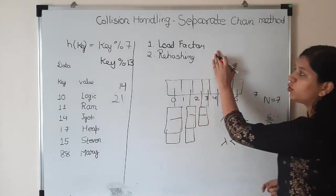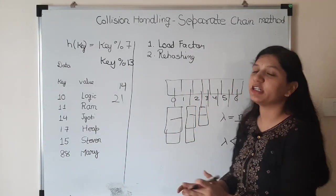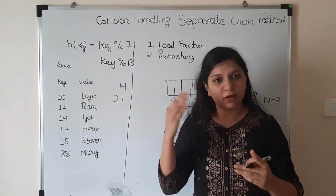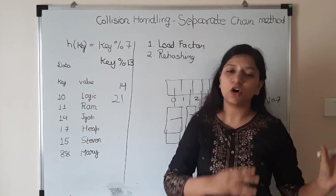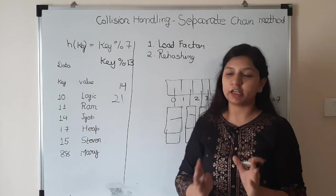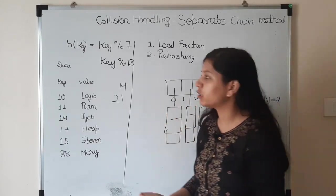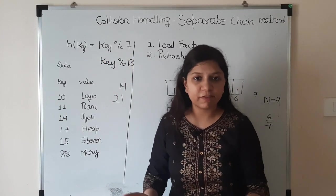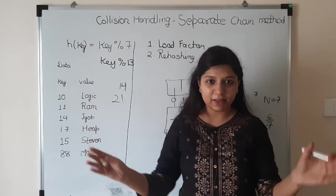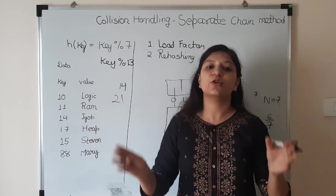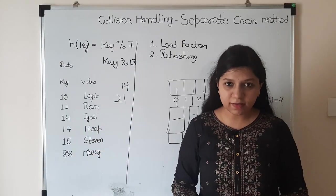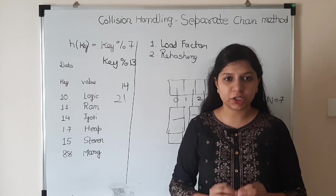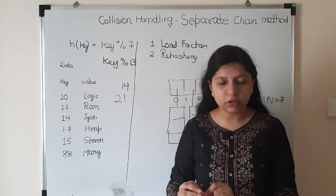These were two terms: load factor and rehashing. When load increases, we rehash all the values using the compression function or hash function. Earlier we had key modulo 7, we increased the capacity to key modulo 13. In this tutorial we covered a collision method which is Separate Chain method.